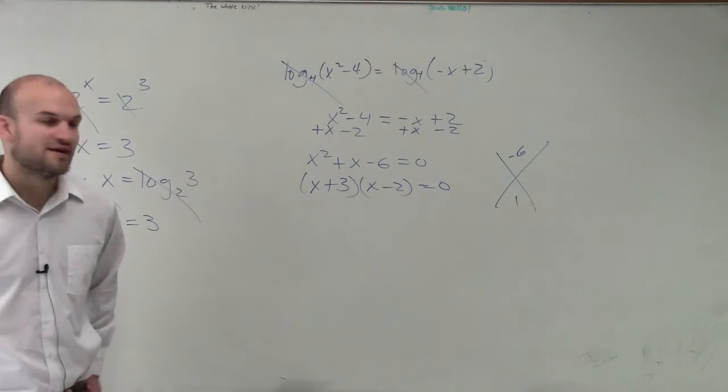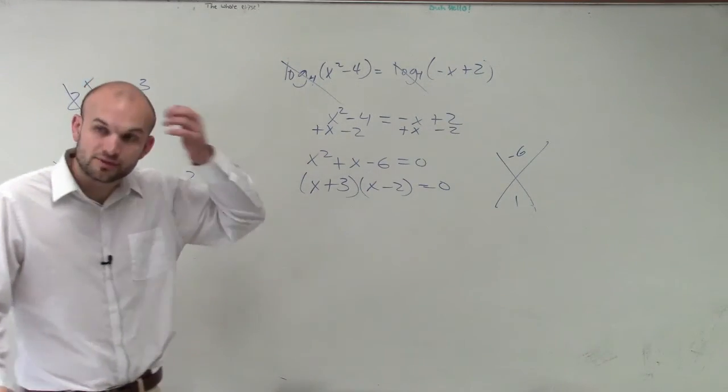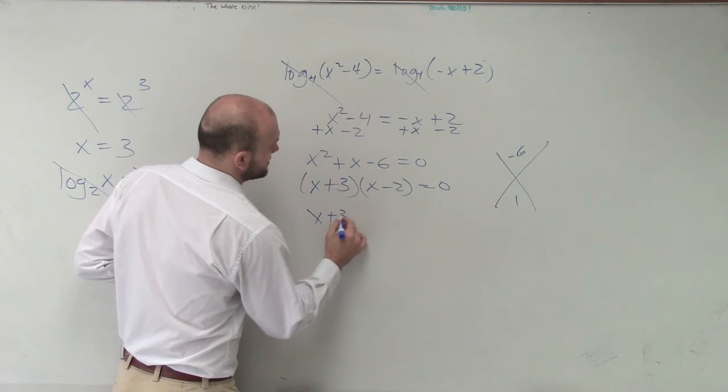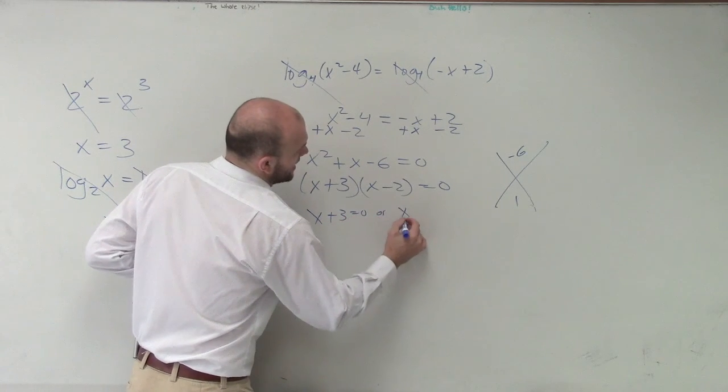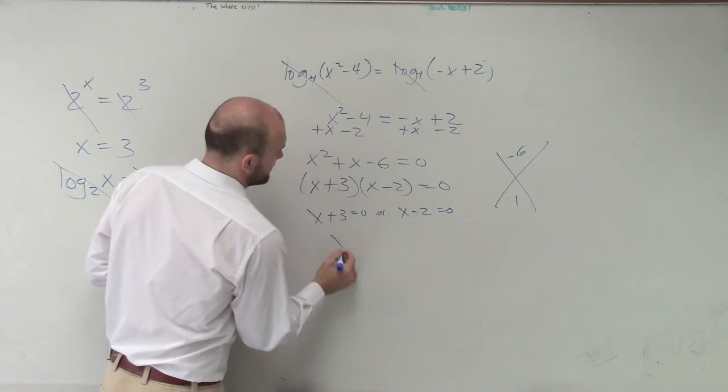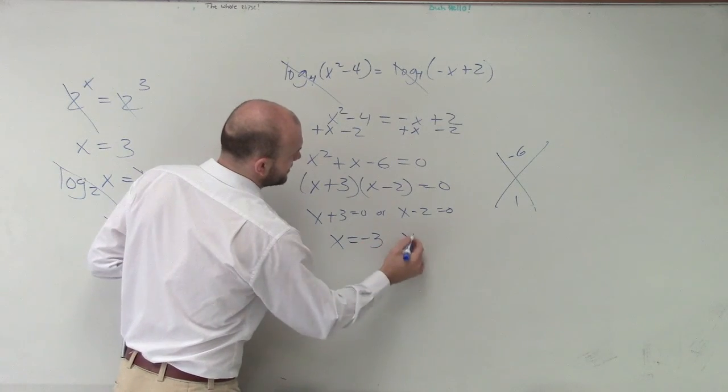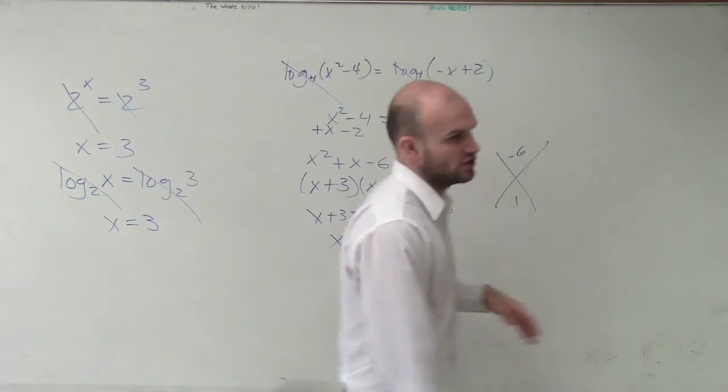The reason we like to factor is because once it's factored, I can apply the zero product property, which states x + 3 = 0 or x - 2 = 0. Therefore, our solution is x = -3 and x = 2.